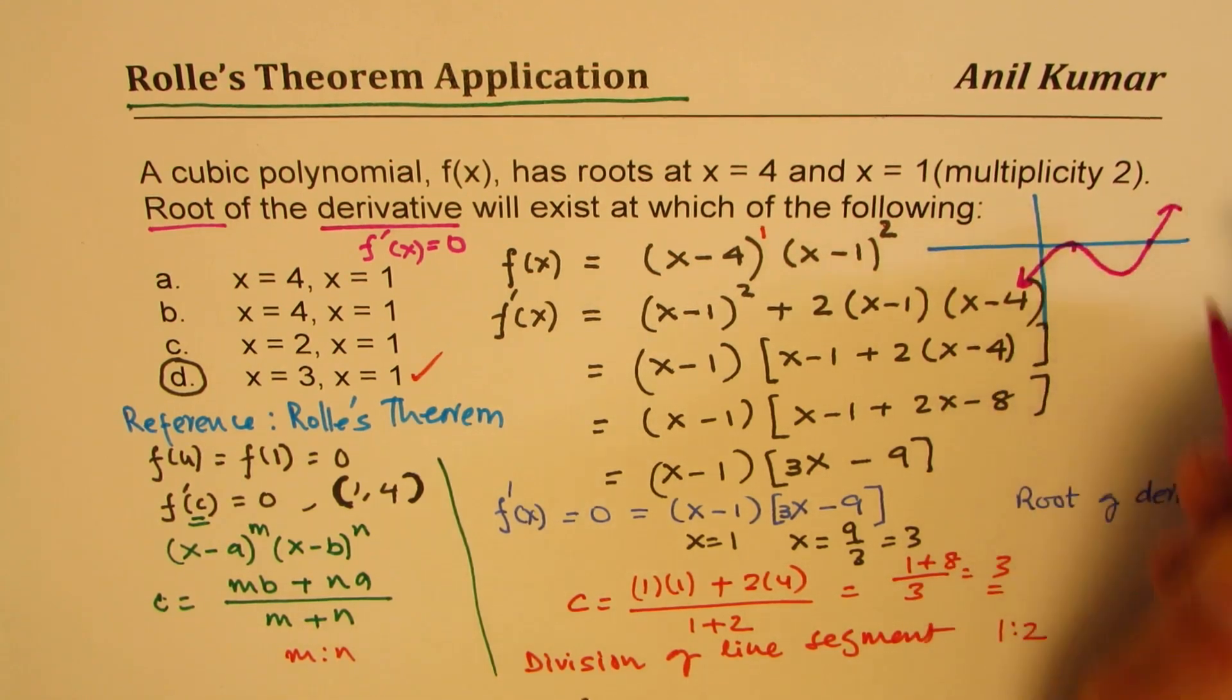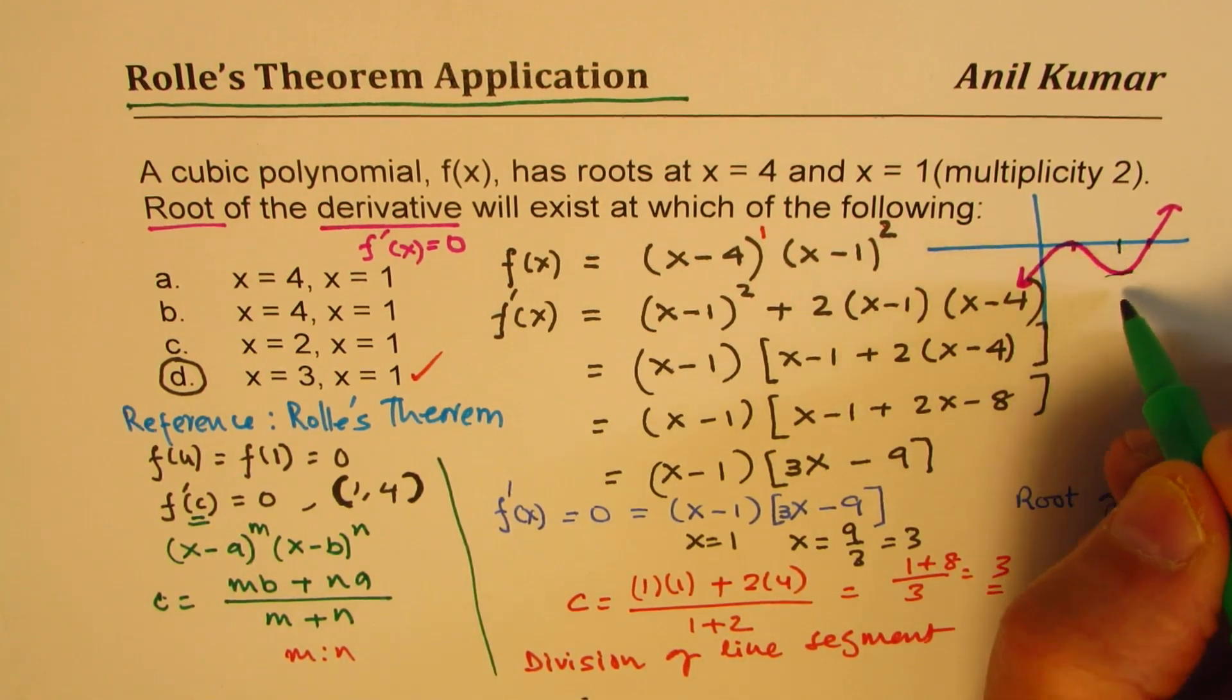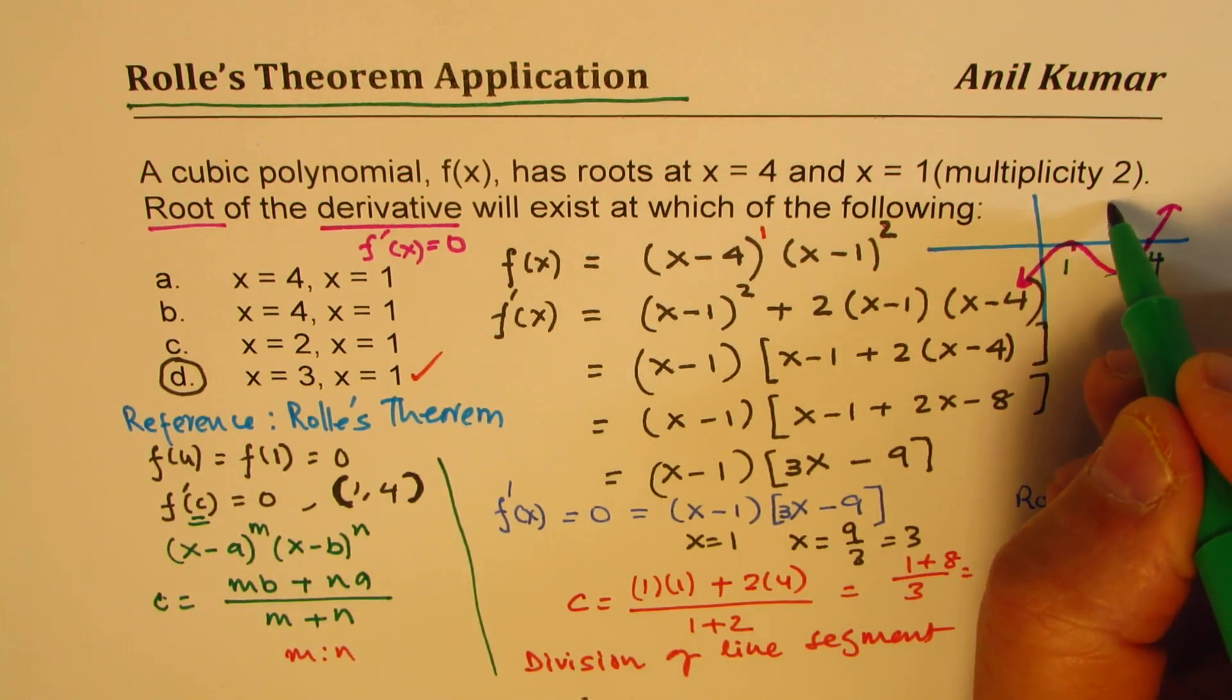Is that okay? So that is how we are going to graph it. So this 0, we wanted to find derivative, right? C. So we found this point C is in between 1 and 4, and its value is equal to 3.